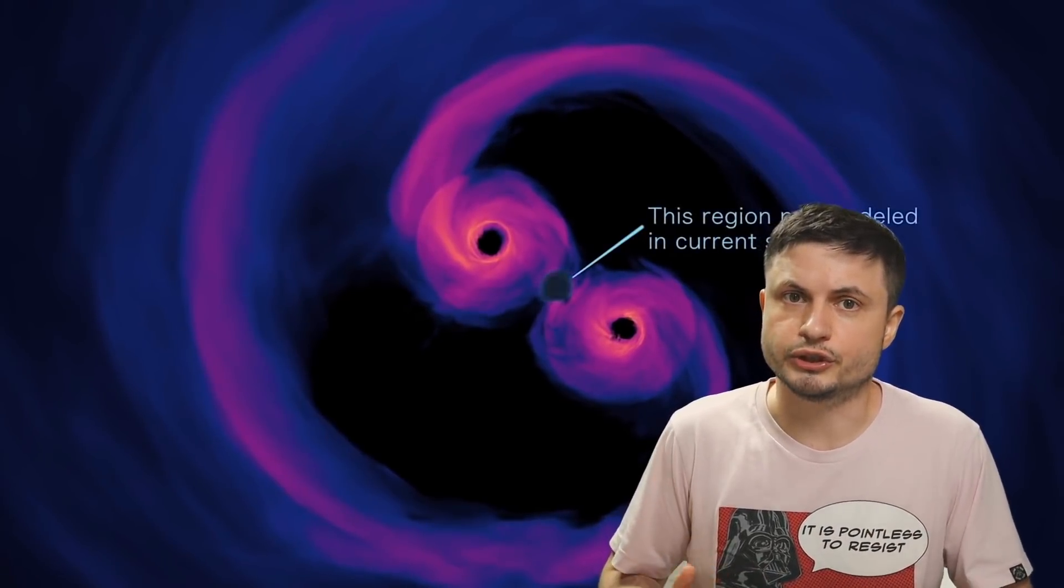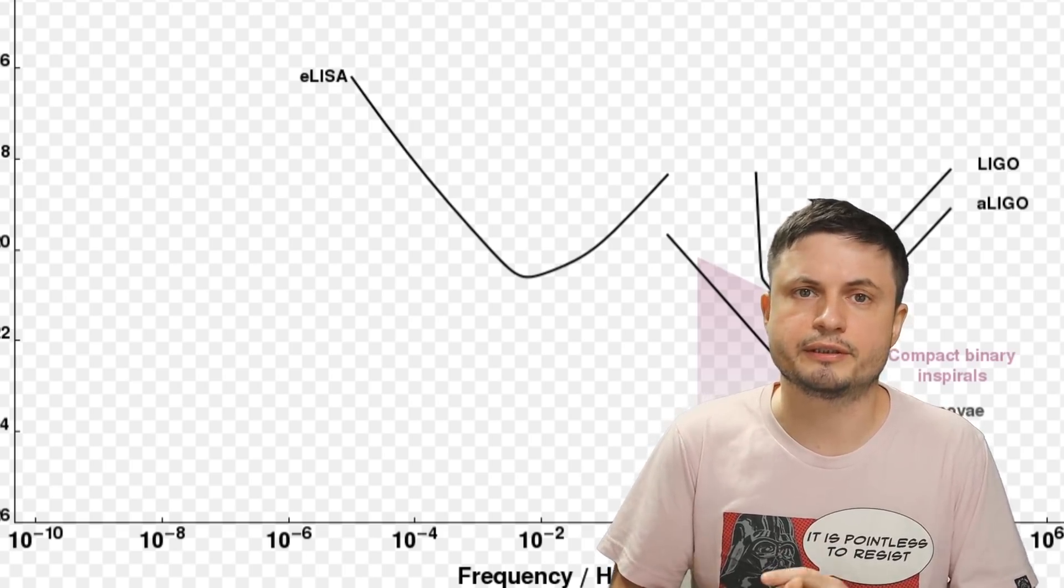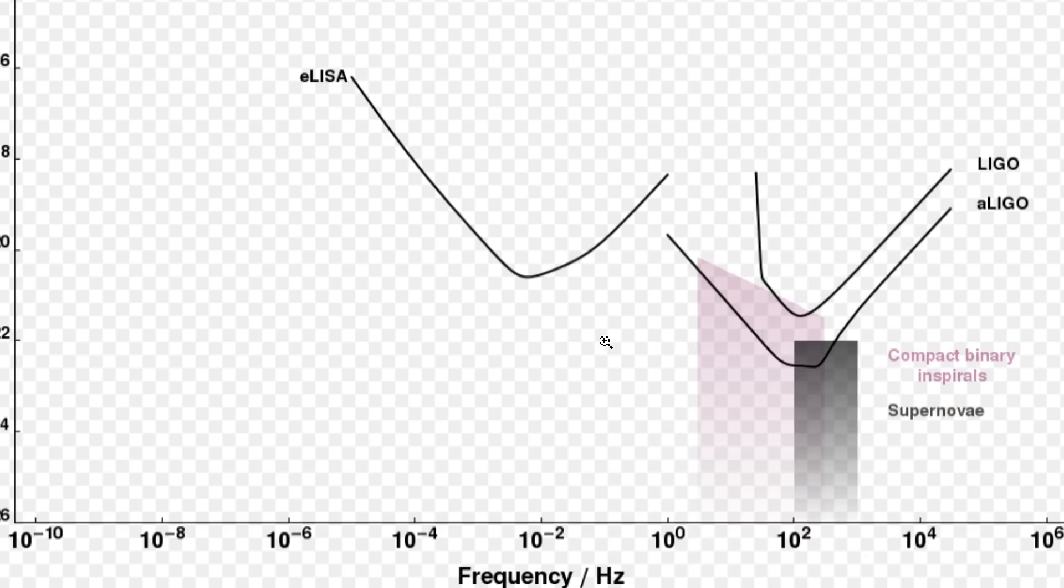However, this is something we're not able to detect right now because for LIGO, which is right here on this graph, the limit of frequency is between 10 hertz and 10 kilohertz. Which means that it can easily detect certain types of collisions between smaller black holes and possibly even detect certain types of supernova, but anything below that is essentially invisible to it.